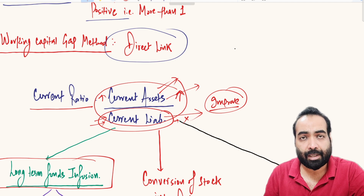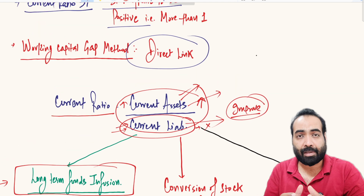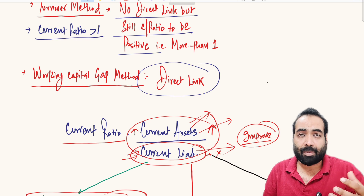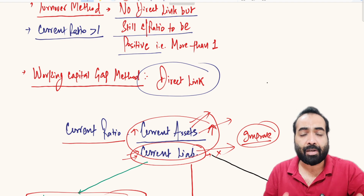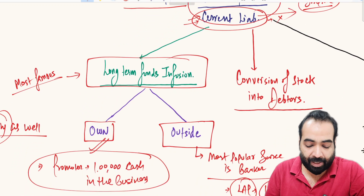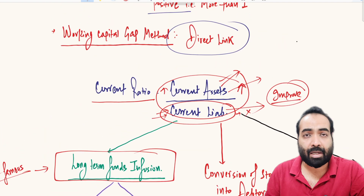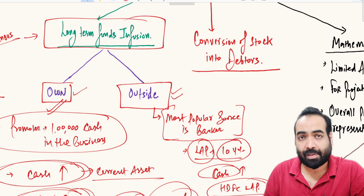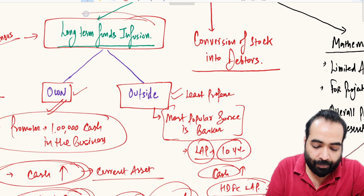Since the LAP is taken for a 10-year period, it is a long-term liability, while cash is a current asset. So current assets increase but current liabilities don't change much. This improves the current ratio. As the current ratio improves — current assets rising while current liabilities remain stagnant — working capital gap (current assets minus current liabilities excluding bank finance) also increases, and hence 75% of working capital gap, which is the final MPBF eligibility, also increases. However, taking funds from outside is borrowing, and this is the least preferred way of infusing long-term funds.